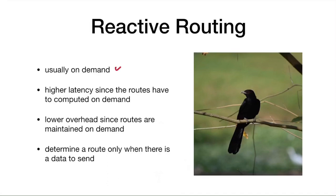Reactive routing is on-demand: the route is selected only when there is a demand. This results in higher latency since routes are computed on demand, taking slightly more time to get triggered. However, the overhead is lower since routes are maintained only on demand. The key advantage is that a path is determined only when there is data to send.